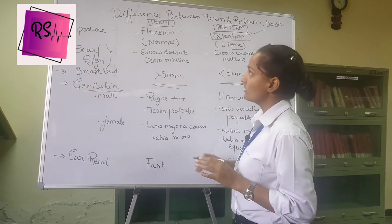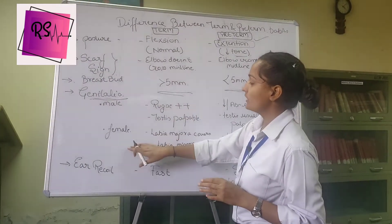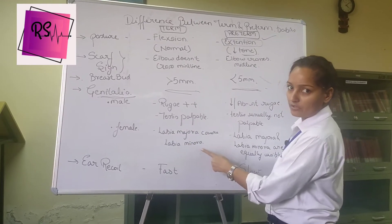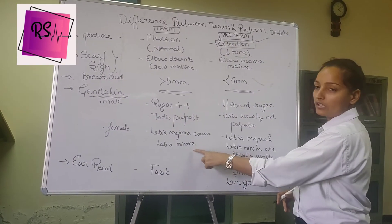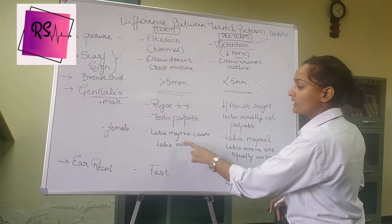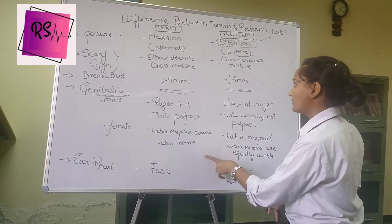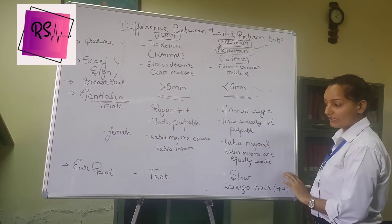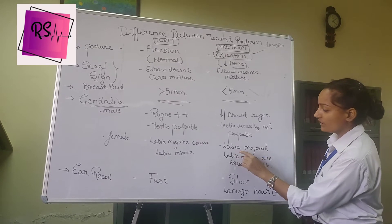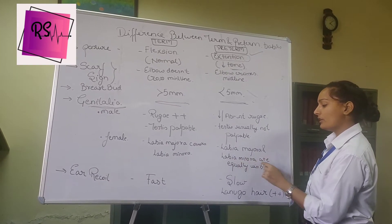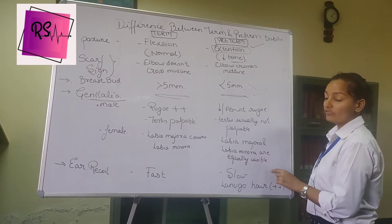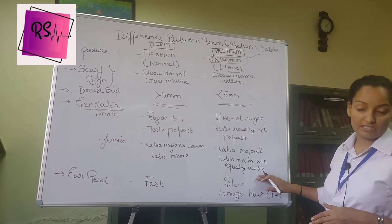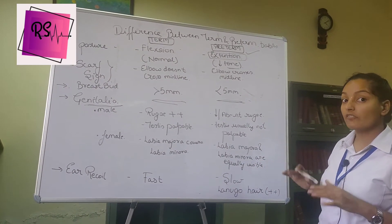If a female child is born at term, the labia majora covers the labia minora. But if a female child is born preterm, the labia majora and labia minora are equally visible — the labia majora does not cover the labia minora, meaning they are not developed properly.